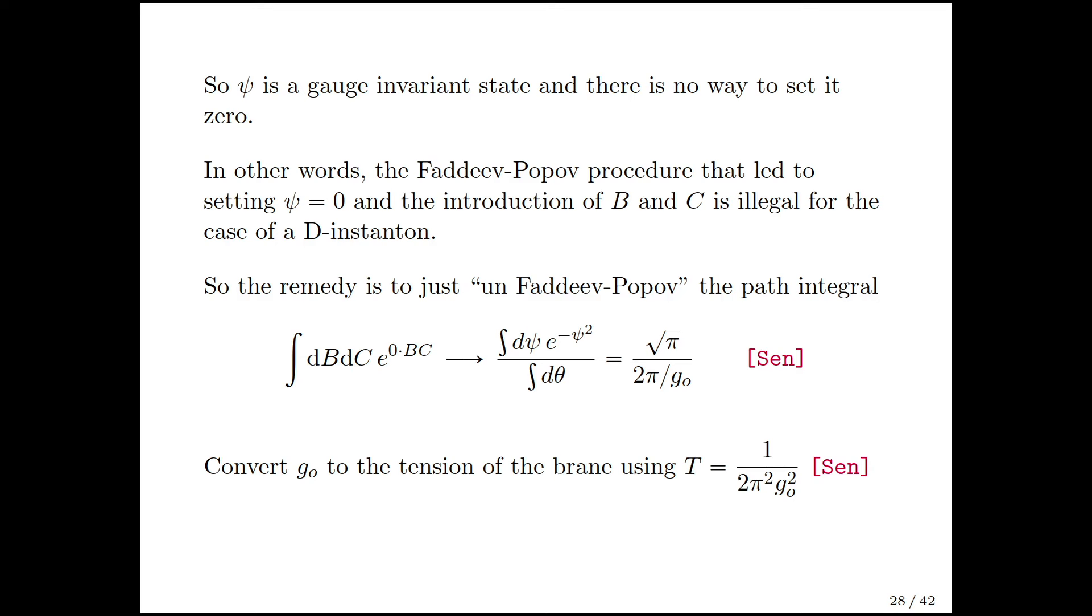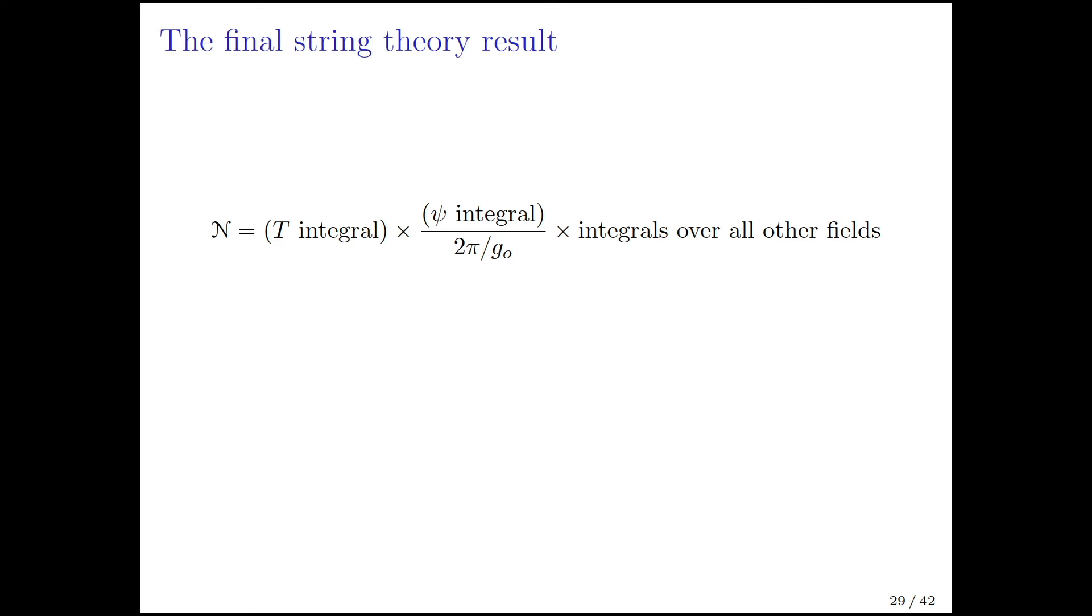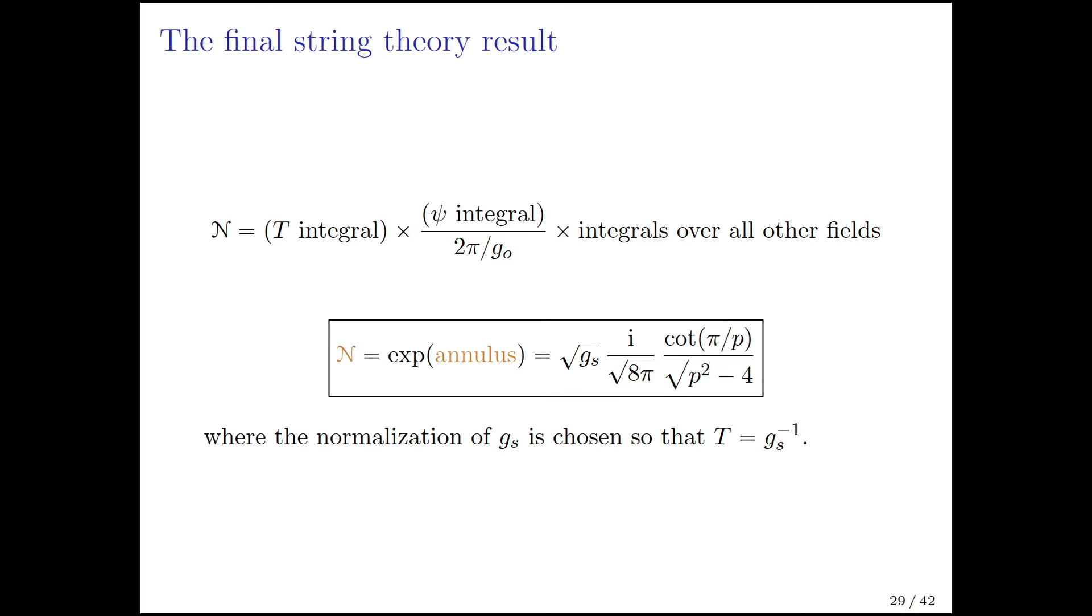Now you can convert G0 to the tension of the D-brane as well. So finally, this N, you have the tachyon integral, you have the psi integral divided by the volume of the gauge group, and then these integrals over all the other fields that I didn't write down explicitly, but they're there. You just do the whole thing and you get the answer. The i came from the tachyon, the square root of G string, which is basically this G0 factor in the upper equation, came from this gauge volume. The integrals over all the other fields give you some infinite product, and the cotangent has some infinite product representation. That's why the cotangent showed up here. It comes from some infinite product.